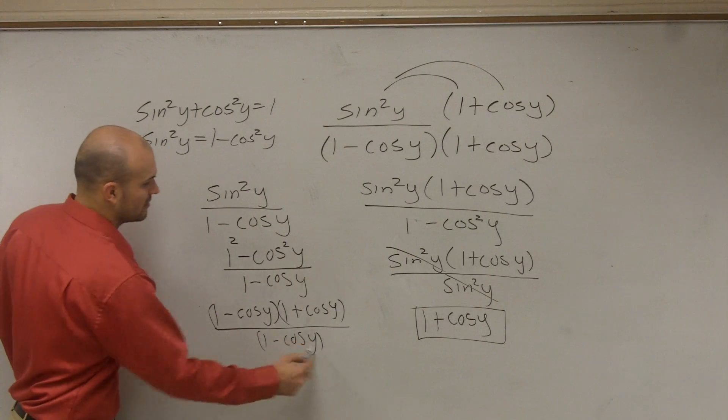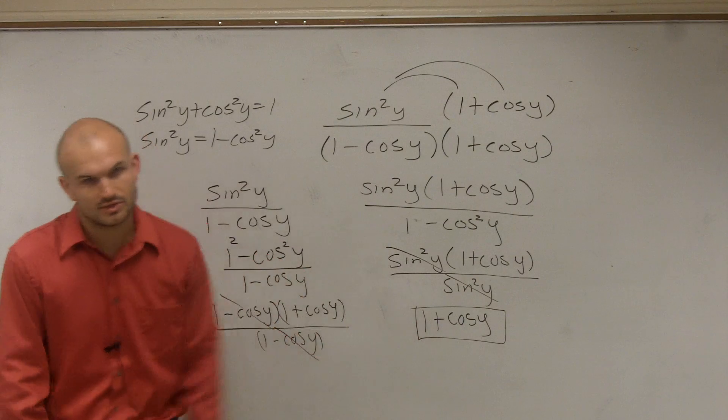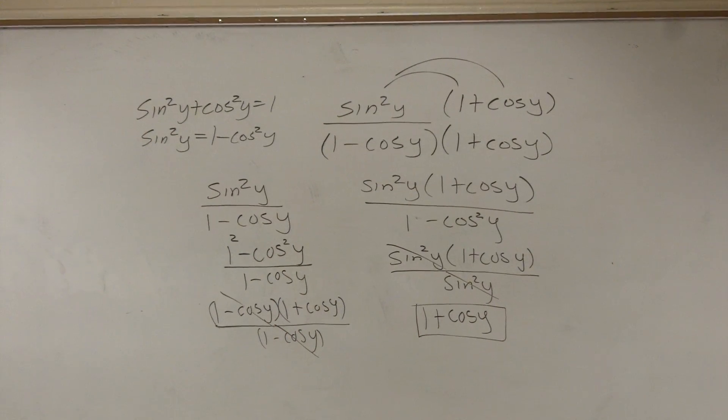So, therefore, these two terms divide out to 1 and I'm left with 1 plus cosine of y which is my answer right there. So, there's a long and a short way to solve. We got the same thing. Thank you.